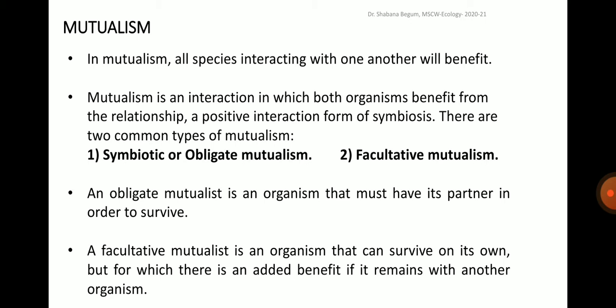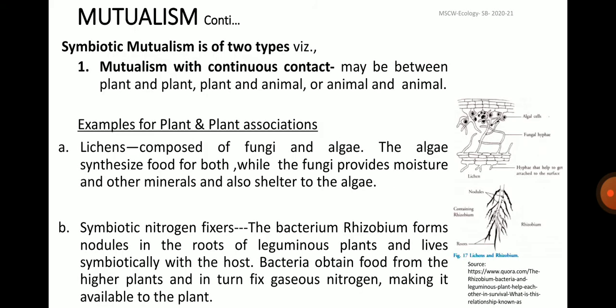In mutualism, all species interacting with one another will get benefit. Mutualism is an interaction in which both organisms benefit from the relationship. There are two common types: symbiotic or obligate mutualism, and facultative mutualism. An obligate mutualist is an organism that must have its partner in order to survive, while a facultative mutualist is an organism that can survive on its own but has an added benefit if it remains with another organism. Symbiotic mutualism involves continuous contact and the association may be between plant and plant, plant and animal, or animal and animal.